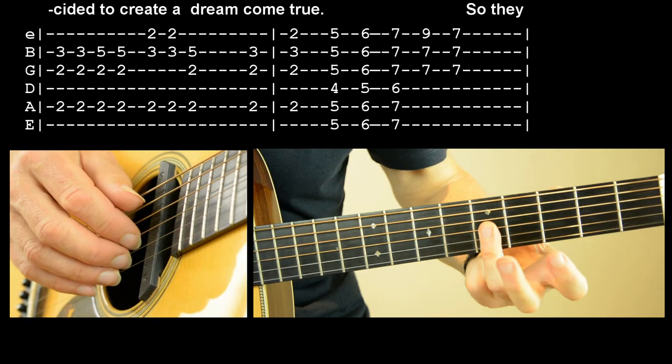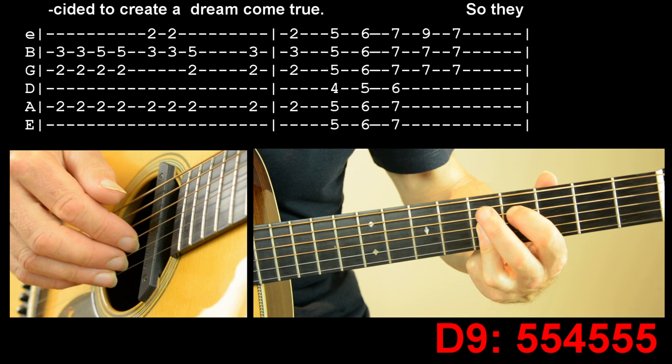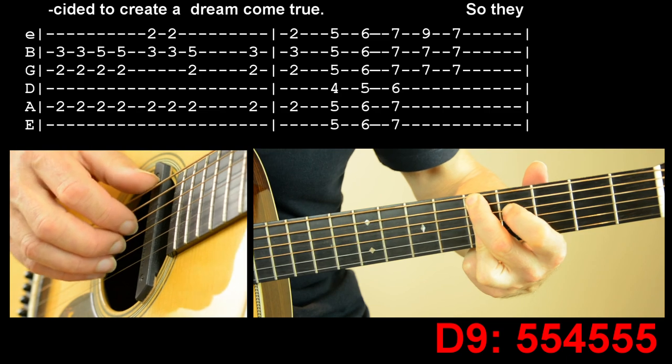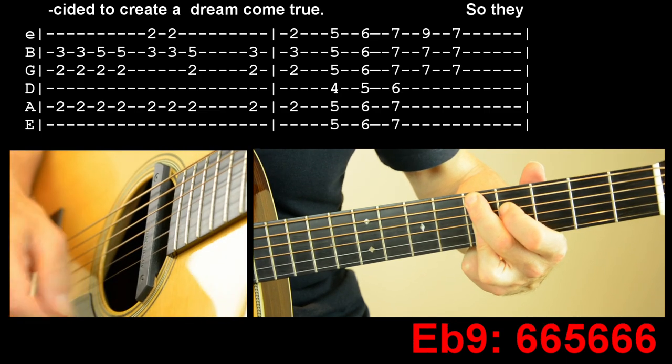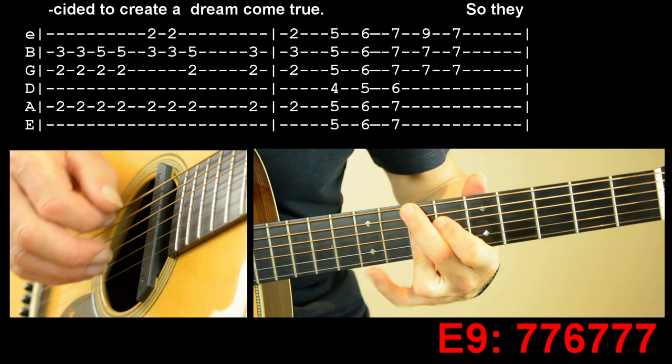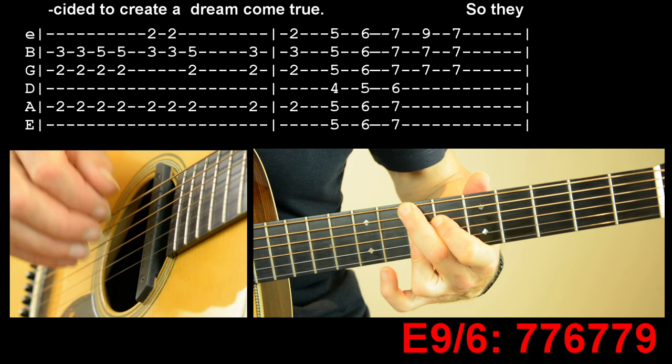Then we're going to go from D ninth up to E ninth via E flat ninth. So ninth you play in these three strings with that finger index finger on the next one down and those two pretty tricky if you've not played that one before just persevere.